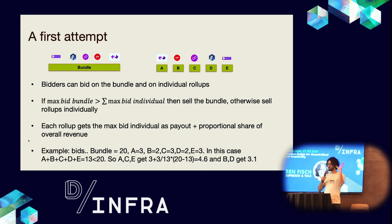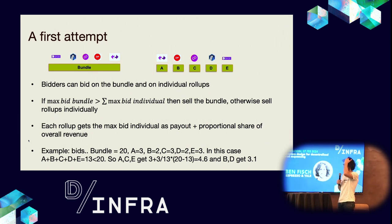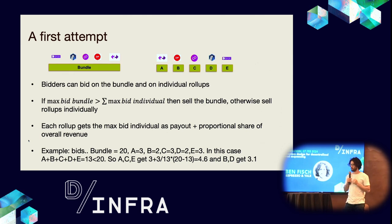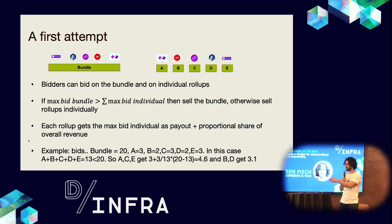We have a surplus value from allocating the bundle. A, C, and E would get their max bid plus their proportional share of the surplus. A would get 3 plus (3/13) × (20 − 13), so approximately 4.6, and B and D would get approximately 3.1 respectively.